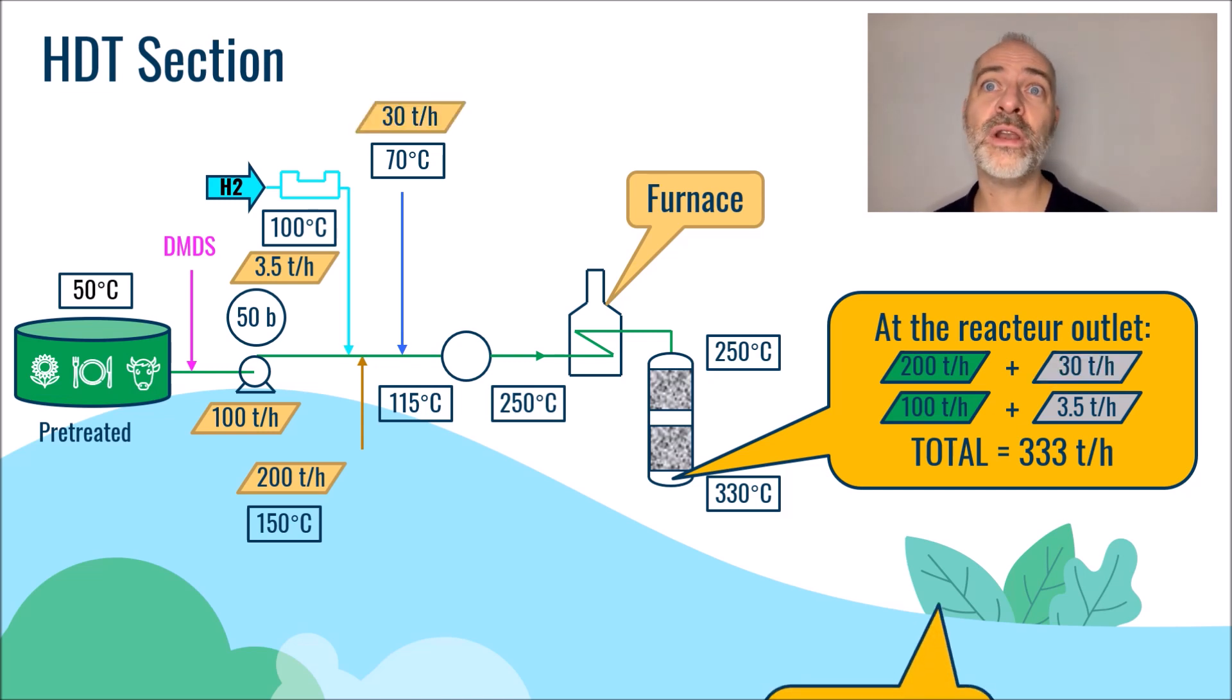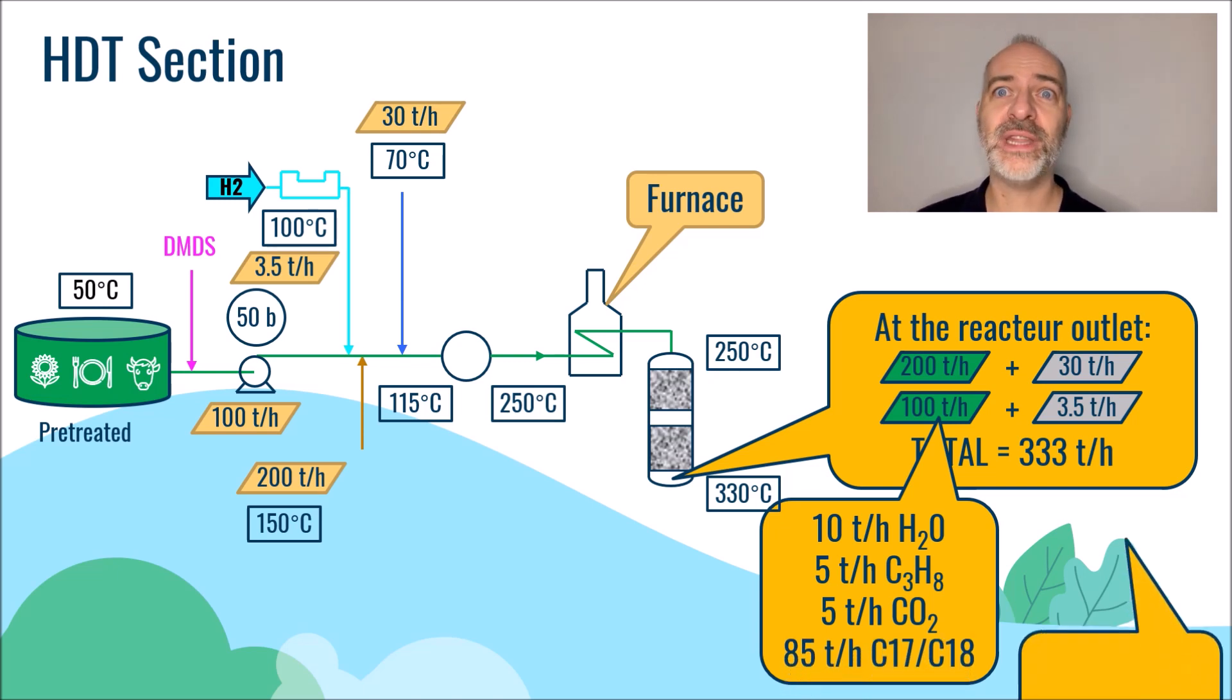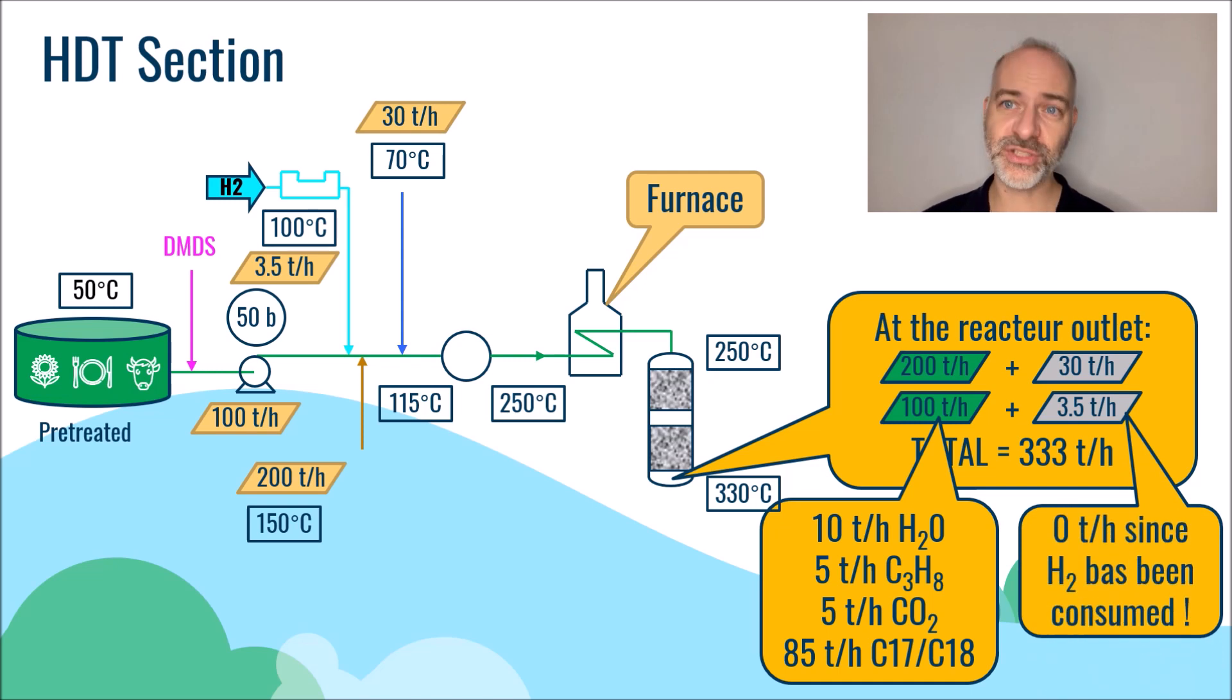On the other hand, the 100 tons per hour of fresh feed became 10 tons per hour of water, 5 tons per hour of propane, 5 tons per hour of CO2, and 85 tons per hour of linear paraffins. It should be noted that the 3 tons per hour of hydrogen were consumed.